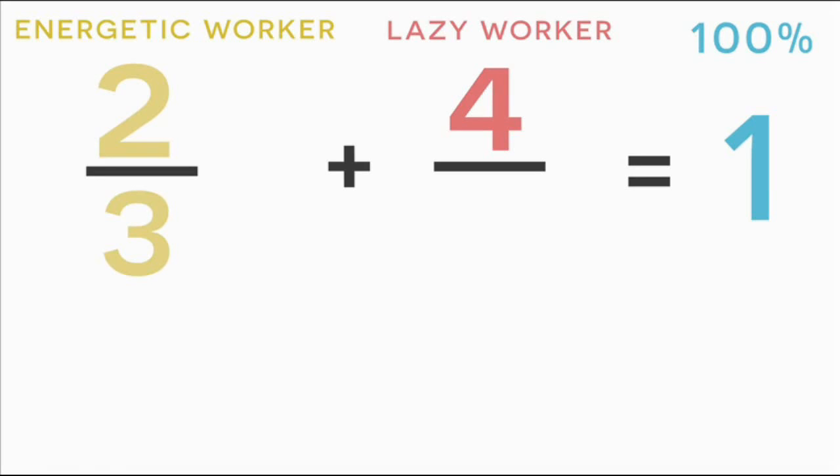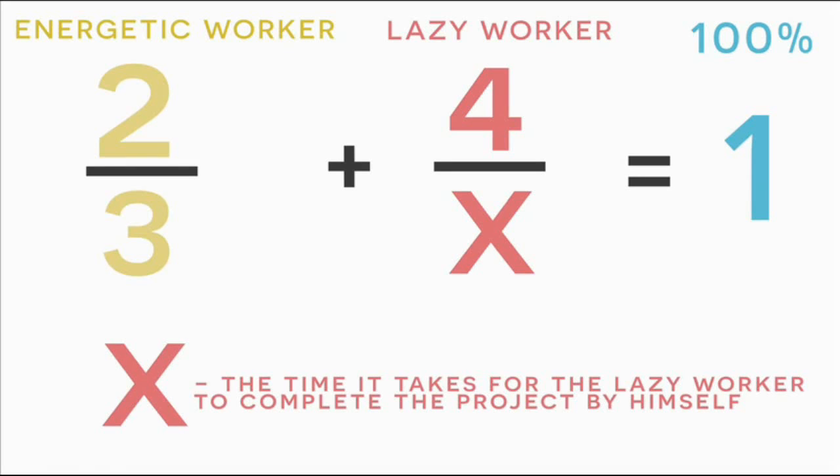And in the denominator of this fraction, we'll just leave it as the letter x because we don't know how long it takes him to complete the project by himself. So x is going to represent the time it takes the lazy worker to complete the project by himself. And if we add these two fractions together, it's going to be equal to 100%, or the number one.